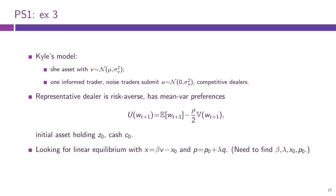A quick refresher on Kyle's model. We have one asset with fundamental value V, which is distributed normally. We have one informed trader who chooses the trade size. We have some number of noise traders who submit a random order, also distributed normally with zero mean. And we have competitive dealers who provide a price schedule depending on the total order flow of noise traders and the informed trader together. All trades happen at that final price.